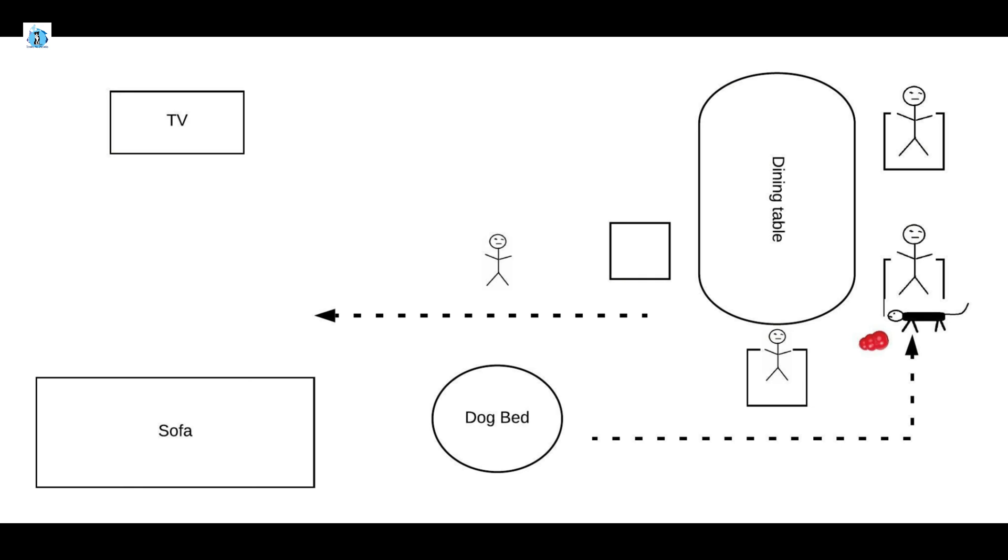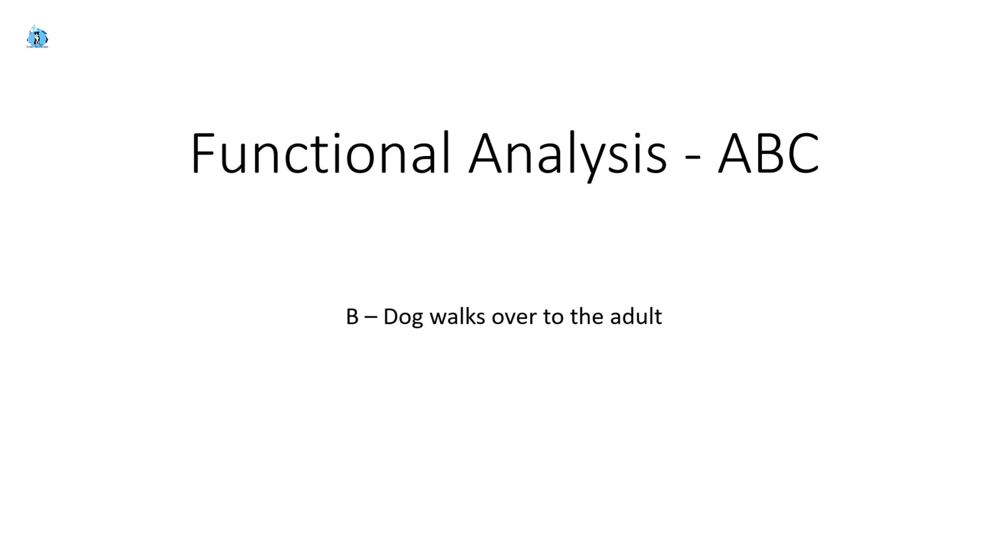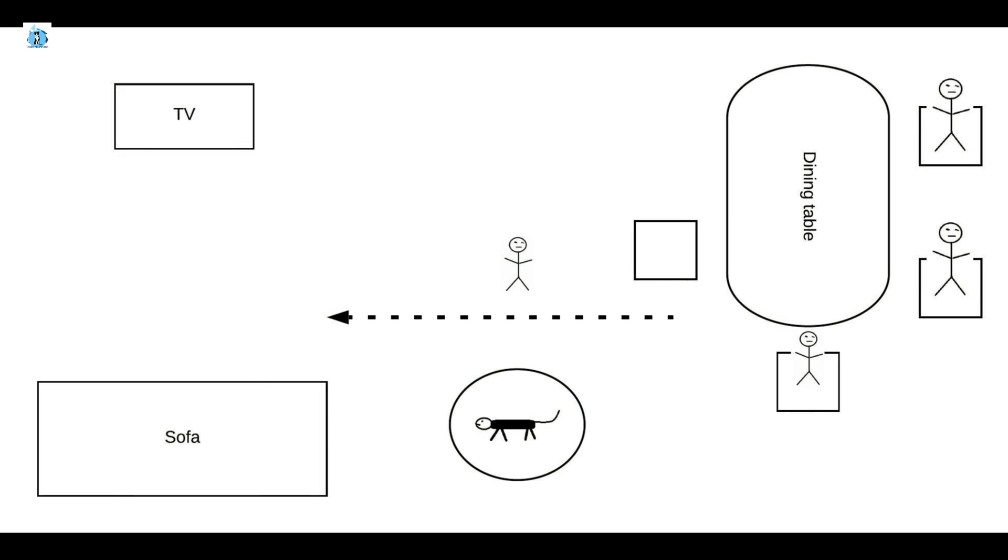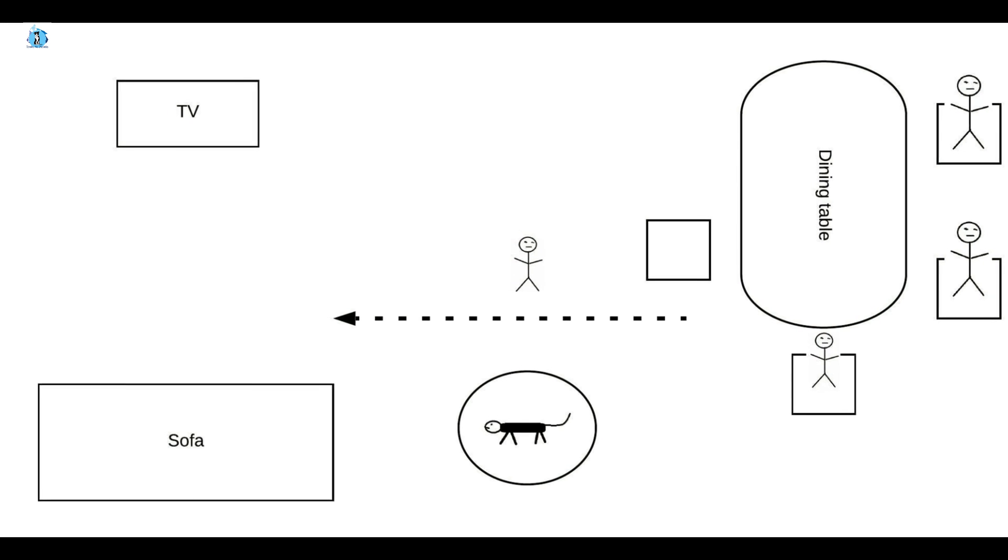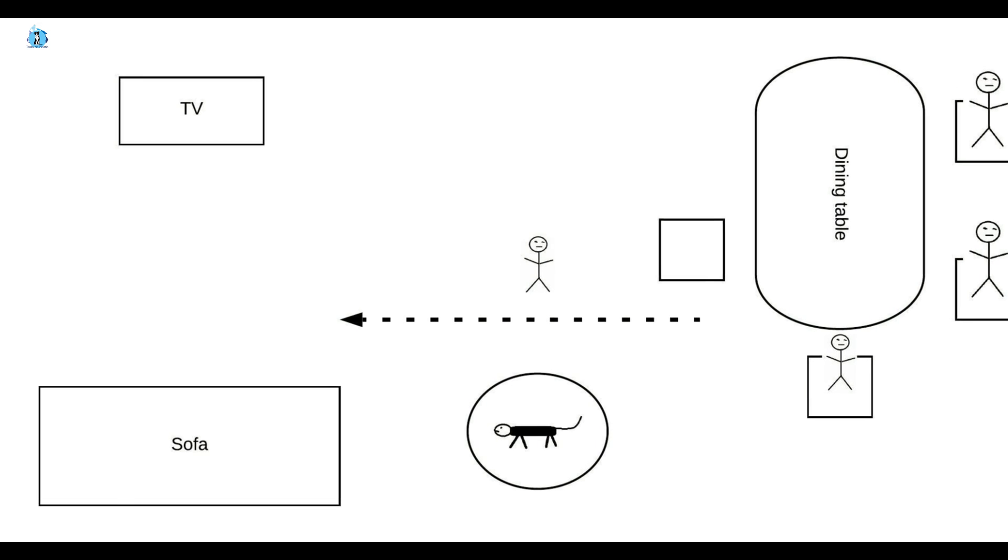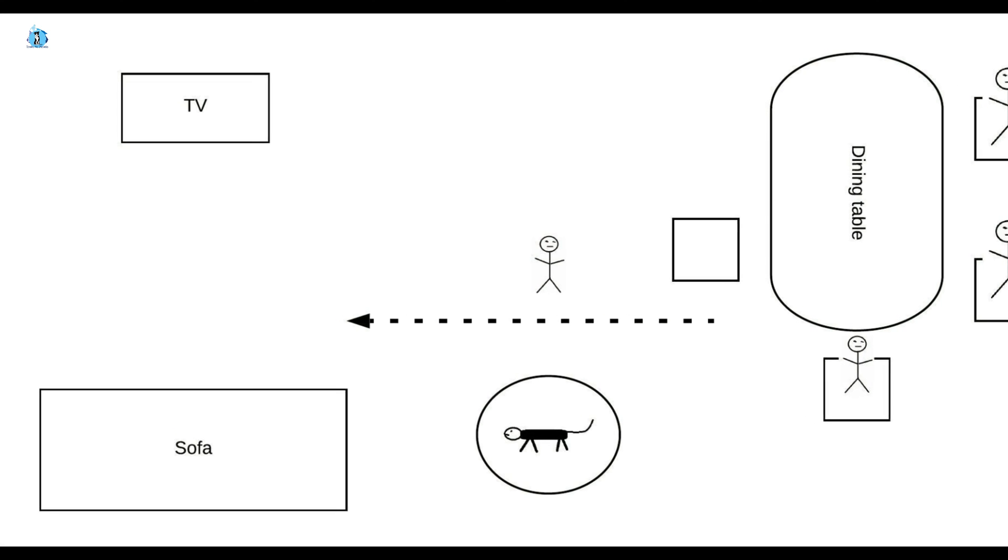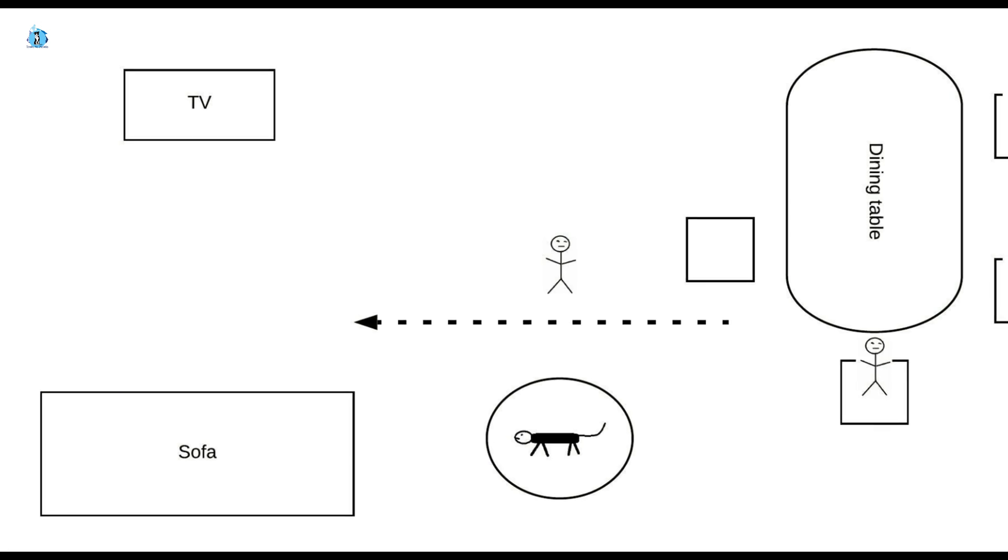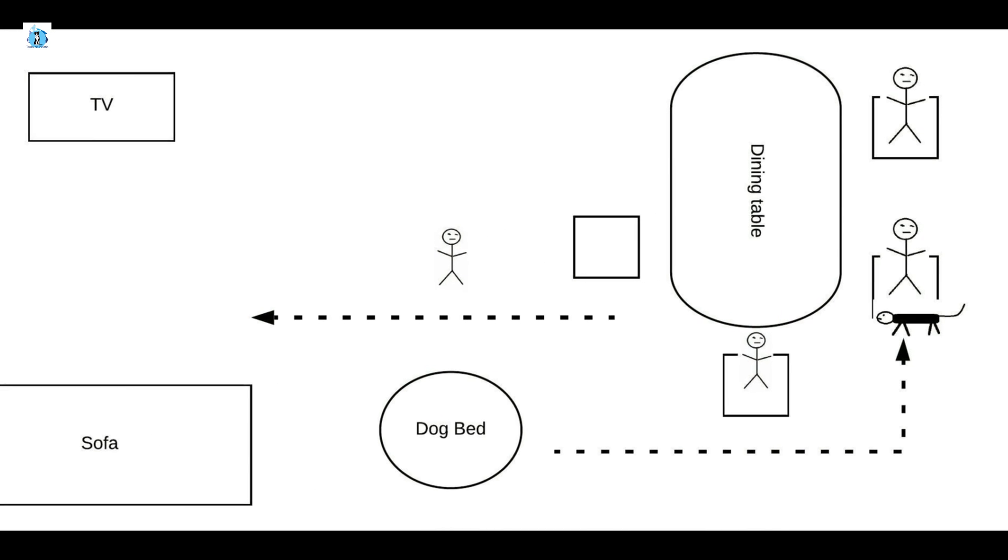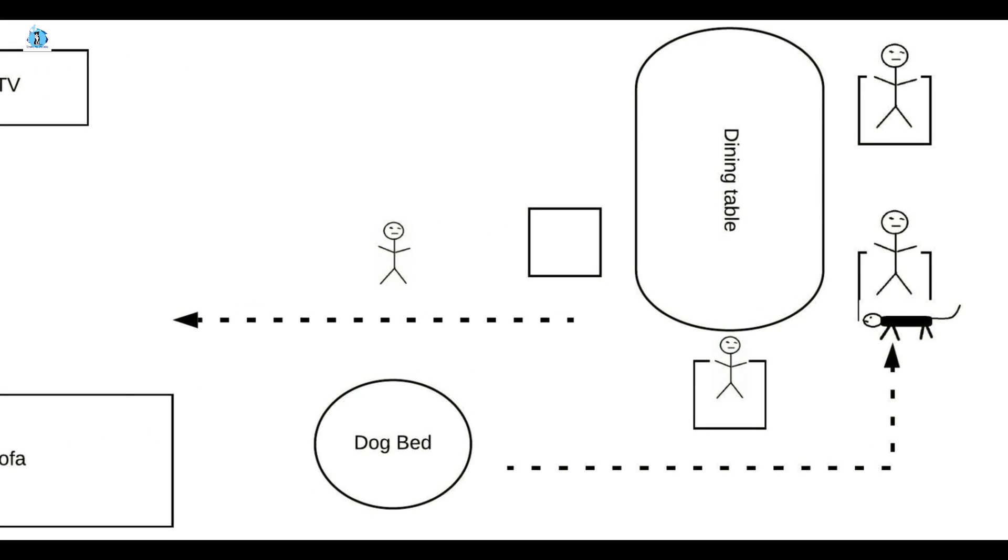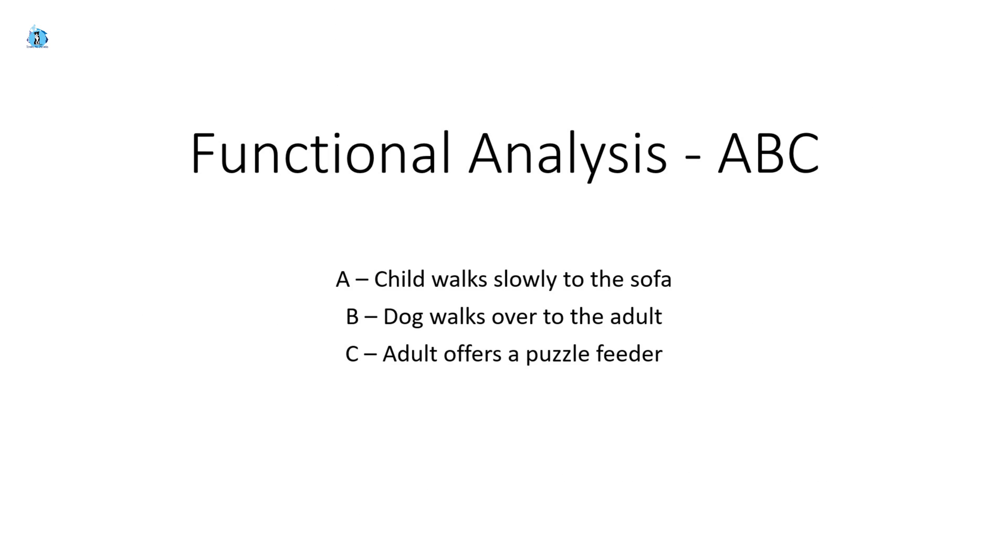In this situation, we have the dog walking over to the adult. The immediate antecedent is the child walking slowly to the sofa. In other words, the dog sees the child walking slowly to the sofa at the end of dinner time. And that antecedent triggers the dog to stand up and slowly walking over to the adult.